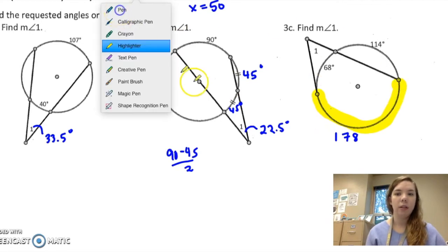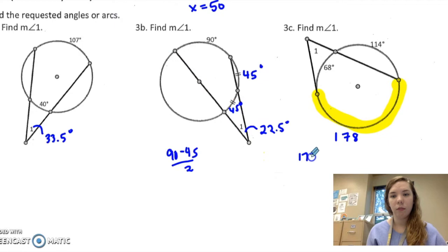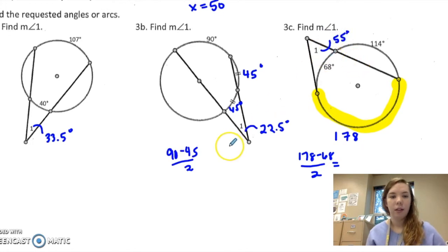and then I would take 178 minus 68 over 2, which should be 55 degrees.